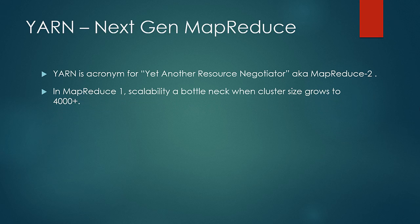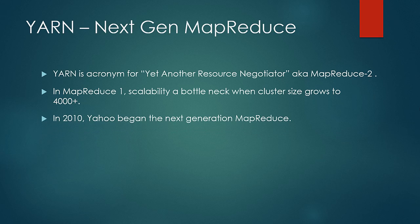While using MapReduce 1, it was observed that the scalability got saturated when the cluster size increased to 4000+ nodes, majorly because of the load on the job tracker. In 2010, Yahoo started the project to create the next generation MapReduce with more features to increase performance by smarter memory utilization, enhanced scalability and flexibility, so it could accommodate and run many versions of distributed frameworks in parallel on the same cluster.